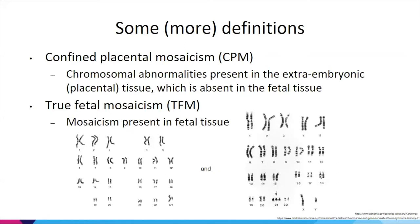With true fetal mosaicism, we're seeing two or more separate chromosome analyses or karyotypes where you can visually identify two different populations of cells. True fetal mosaicism can lead to medical concerns including developmental delay or birth defects, and that depends on the amount of chromosome content involved, the number of abnormal cells, and their distribution throughout the body.